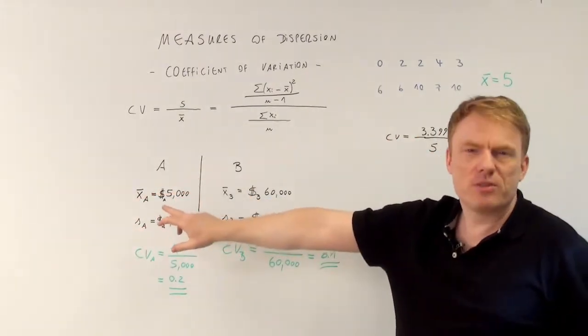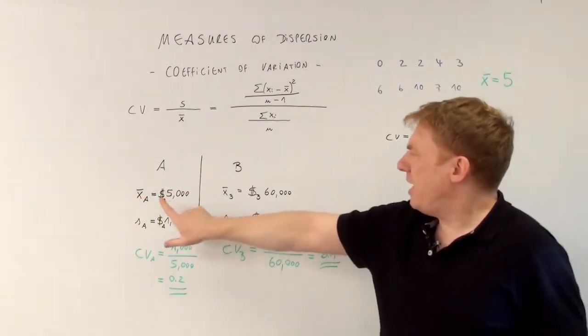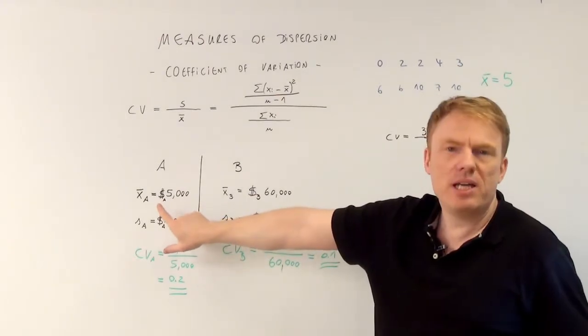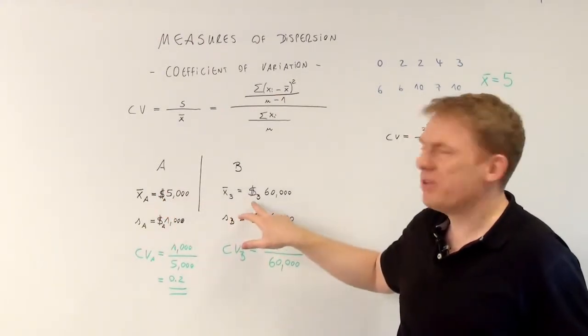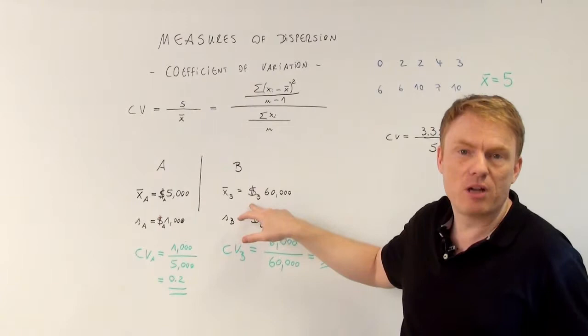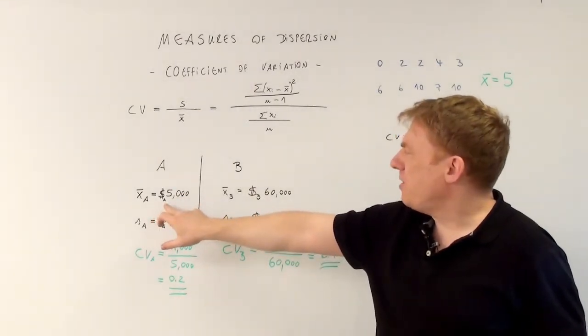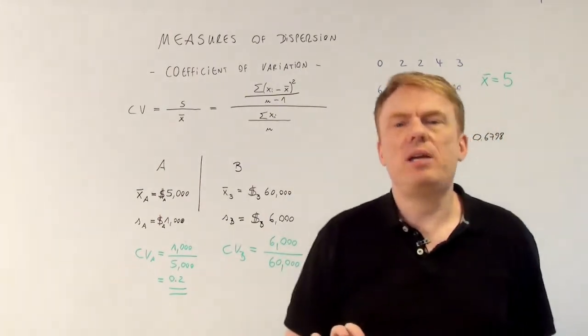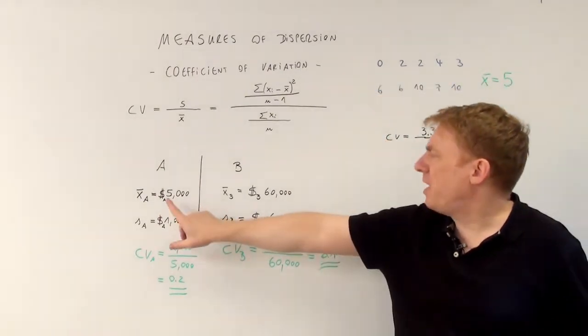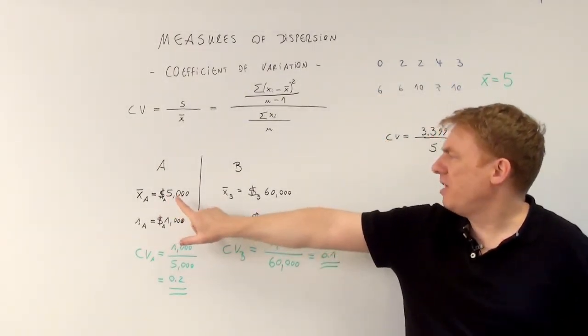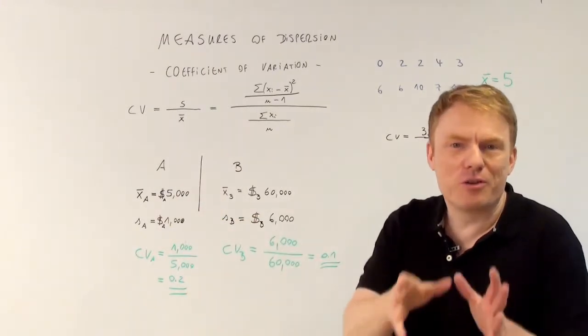We have two different countries, and the currency of country A is dollar A, the currency of country B is called dollar B. So the arithmetic mean, the average income of country A would be for example $5,000 A dollars, dollars of country A.